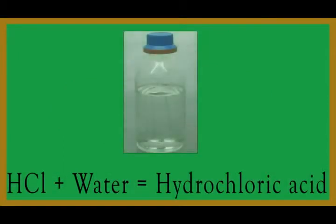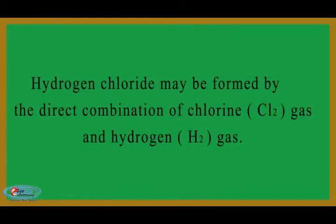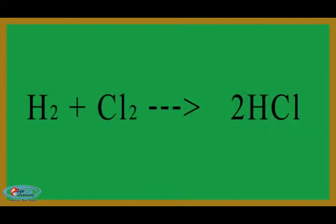A solution of the gas in water is called hydrochloric acid. Hydrogen chloride may be formed by the direct combination of chlorine Cl2 gas and hydrogen H2 gas. Equation of reaction is H2 plus Cl2 give 2 HCl.